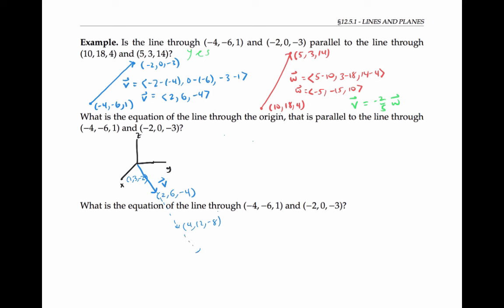In fact, any point with coordinates 2T, 6T, negative 4T will be on my line — that would be the point at the tip of the vector T times V. In other words, the line through the origin that is parallel to V will consist of all points of the form x equals 2T, y equals 6T, and z equals negative 4T, where T is a real number. Note that negative values of T correspond to points on this end of the line. Now that was the line through the origin parallel to those two points. Next, let's find the equation of the actual line through these two points.